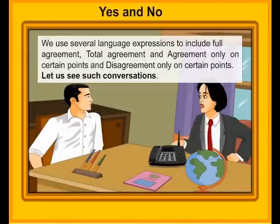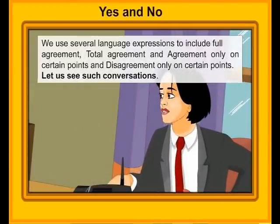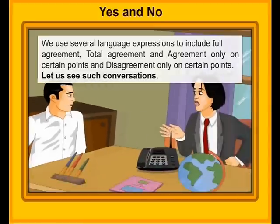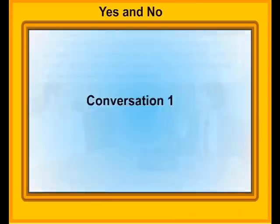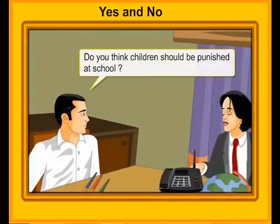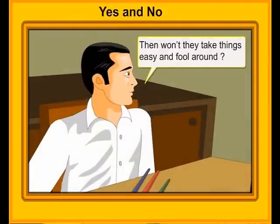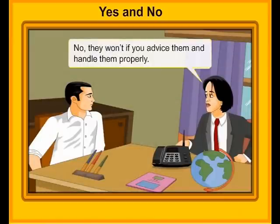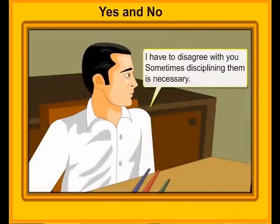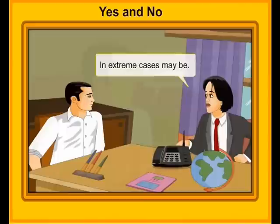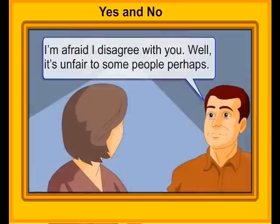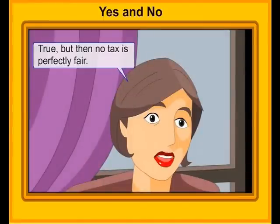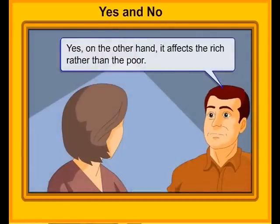Yes and no. We use several language expressions to include full agreement, total agreement, agreement only on certain points, and disagreement only on certain points. Conversation one: Do you think children should be punished at school? Definitely not. Then won't they take things easy and fool around? No, they won't if you advise them and handle them properly. I have to disagree with you — sometimes disciplining them is necessary. In extreme cases, maybe. Conversation two: The tax is unfair, don't you think so? I'm afraid I disagree with you. Well, it's unfair to some people perhaps. True, but then no tax is perfectly fair. Yes, on the other hand, it affects the rich rather than the poor.